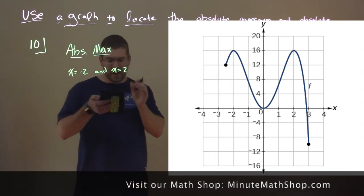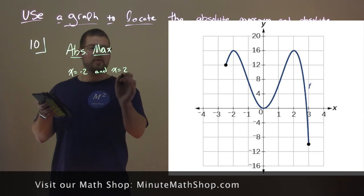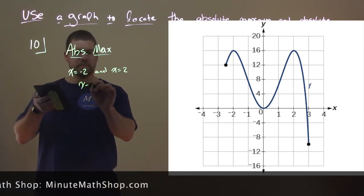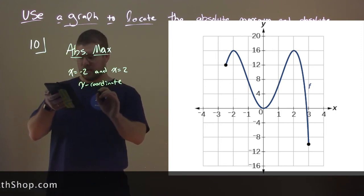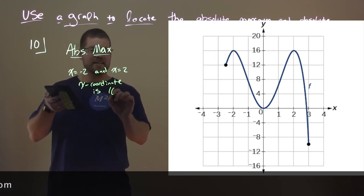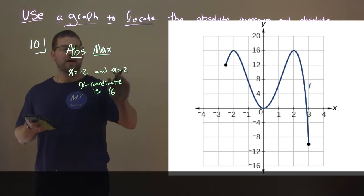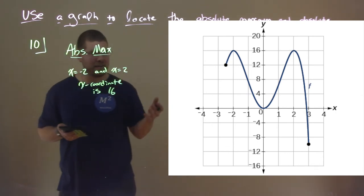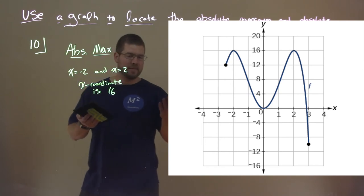We have the two peaks there happen at x equals negative 2 and x equals positive 2. So, the height there is 16. So, the x coordinates are negative 2 and x equals 2, which is the height of the y coordinate. Here is 16. So, we have a height of 16 there, and when x is negative 2 and x is positive 2. So, that would be our absolute maximums. We technically have 2.